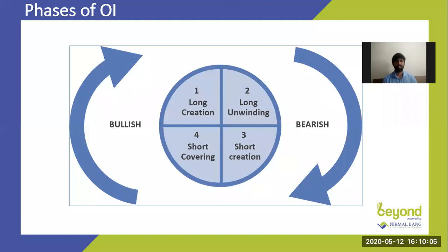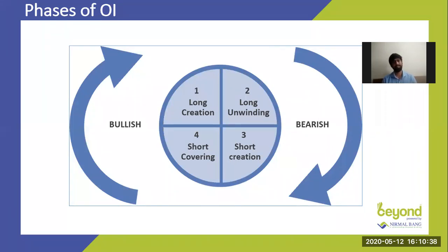There are four phases of open interest. First is long creation — when the price goes up and the open interest goes up, long creation is being made. Second is long unwinding — people who have bought are booking profits, and you'll see the stock coming down along with open interest coming down. The third phase is short creation — after long unwinding, people think the stock is going to come down further and make new shorts. You'll see fresh shorts coming in with the price going down and open interest going up.